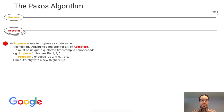So this proposer wants to propose a certain value and sends prepare(5) to all the acceptors. Whenever an acceptor receives a prepare message for a certain ID, it checks if it promised to ignore requests with this ID. If it did promise, it will ignore them. If it didn't promise, it promises to ignore any request lower than that ID and replies with promise(ID). This acceptor got a prepare(5) message and will reply promise(5) to the proposer. Once a majority of acceptors promise, no ID lower than that ID can make it through. So if you get a majority of promise(5), there's no way a majority of acceptors will promise(4) because the two majorities would overlap — a majority of them would ignore requests with ID 4.